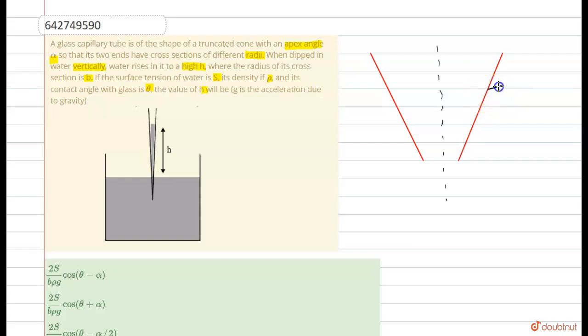This is the contact angle, that is theta. And it's the water level, and this radius is b.